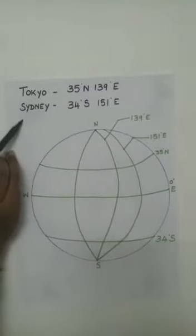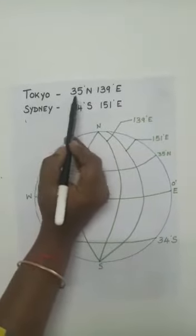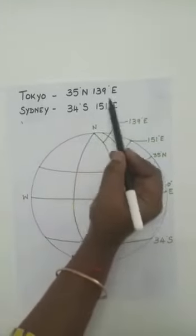Here I have taken examples of two cities, Tokyo and Sydney. Tokyo's latitude is 35 degrees north and longitude is 139 degrees east.